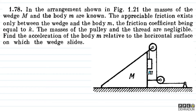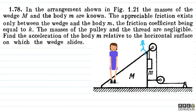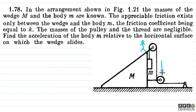Small m ke paas do-do accelerations honge — ek to towards right hoga, aur ek downward direction me hoga. Jabki capital M wedge ke paas sirf aur sirf acceleration hoga towards right. Lekin bachon, yeh motion bada hi simple ho jayega agar main capital M ke nazariye se baat karoonga — uske nazariye se small m ka jo acceleration hai, woh sirf aur sirf downward direction me dikhai dhega.